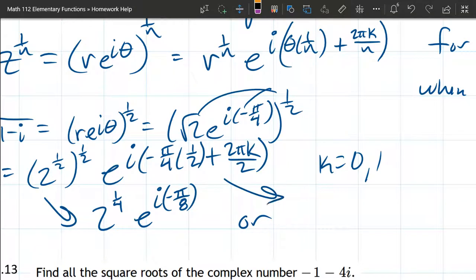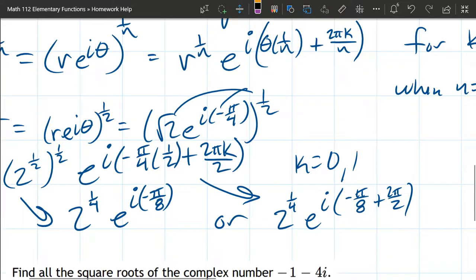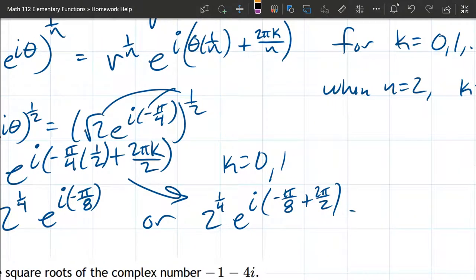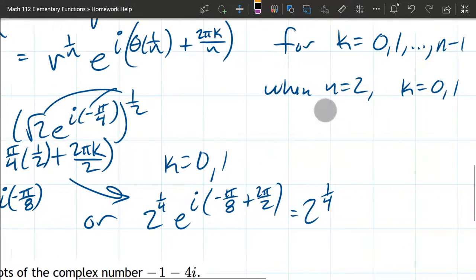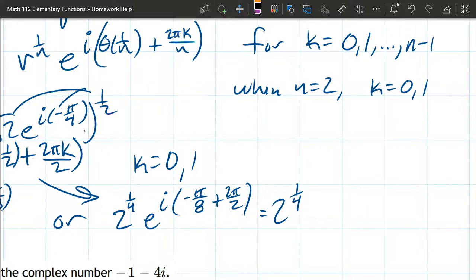Now we'll do k as 1. So we have the same radius, 2 to the 1 fourth, e to the i. We get the same negative pi over 8, but this time our k is 1, not 0. So we get plus 2 pi over 2. We can definitely simplify this down. So it's 2 to the 1 fourth. 2 pi over 2 is the same as 8 pi over 8, so common denominator. E to the i, so we have negative pi over 8 plus 8 pi over 8, which is going to be 7 pi over 8. That will be your other root.